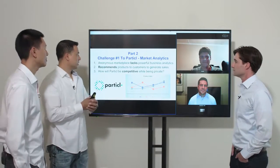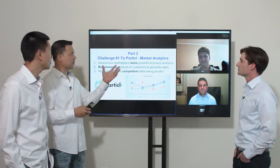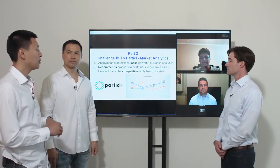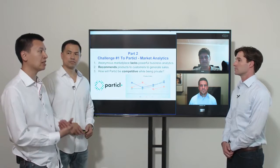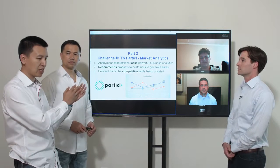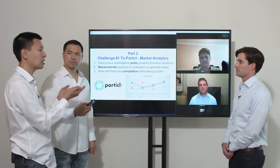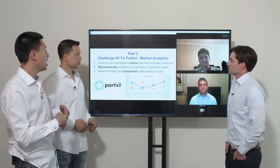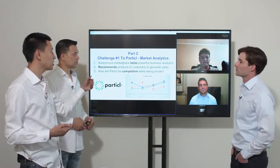The next challenge to the Particle marketplace is market analytics. We're all familiar with eBay and Amazon — they have very powerful market analytics because they have all this data, since users give up their privacy. They use that data for recommendations. When I search for something, I get the product I'm looking for plus a bunch of other products with a high probability I'll buy. I don't think Particle can do that because you don't have this data. How are you going to compete with that while being private?